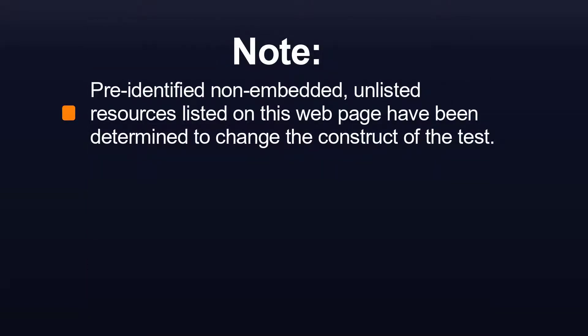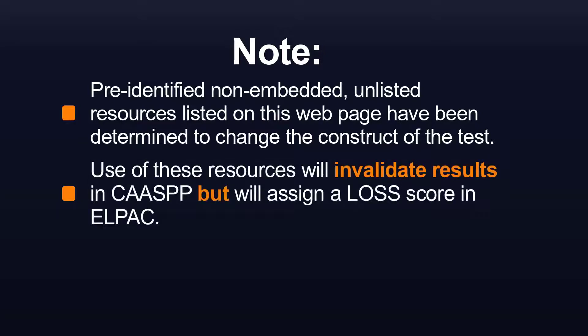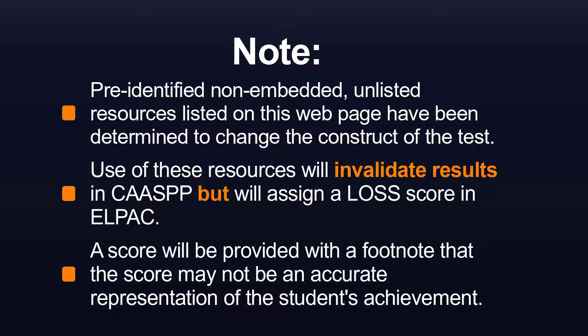Please note, the pre-identified, non-embedded unlisted resources listed on this webpage have been determined to change the construct of the test. In CAASPP, their use will invalidate the results. In ELPAC, the student will be assigned a Lowest Obtainable Scale Score, or LOSS. A student score will be provided with a footnote that the test was administered under conditions that resulted in a score that may not be an accurate representation of the student's achievement. If the unlisted resource you want to assign does not appear on this list, your options will be detailed in Steps 2 and 3.